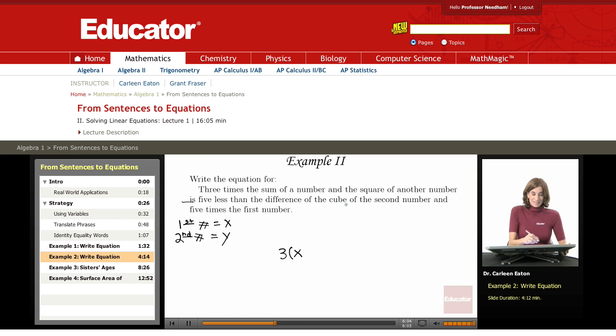And so the sum of x plus the square of another number. Well, the other number is y, and they want me to square that. So I have the left half done. Three times the sum of a number and the square of another number is, equals.